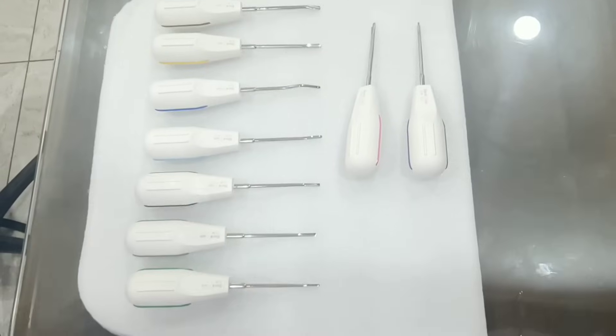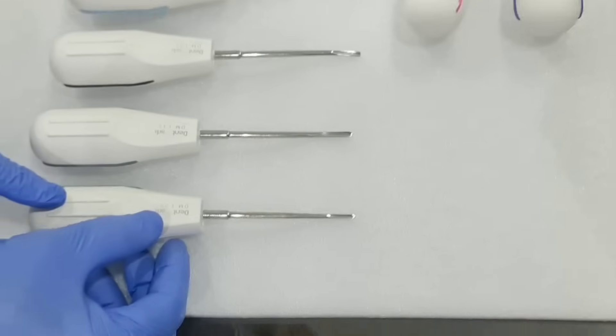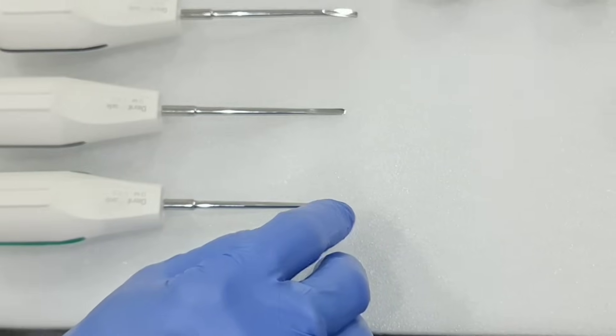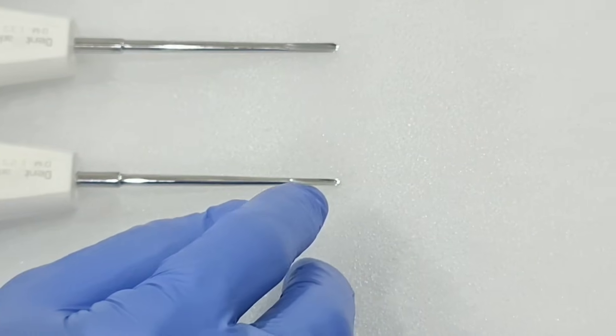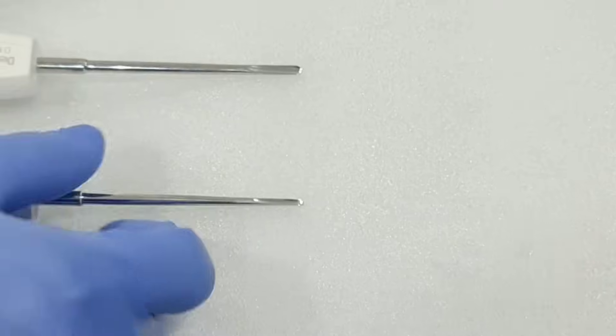So I'll show you one by one all these instruments. This is the model L2S. This is the tip size 2mm and it is used for apical interproximal. You can see this is straight and 2mm is the head size.